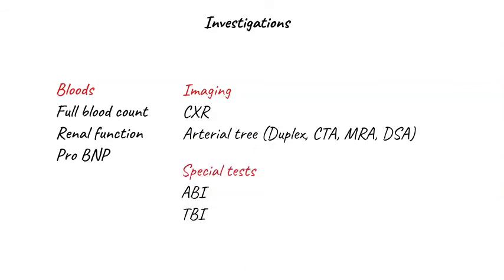Investigations for CLTI can be divided into bloods, imaging, and special tests. For bloods, consider a full blood count to rule out anemia as a contributor; check renal function as many patients have underlying impairment and may need contrast exposure; and an elevated pro-BNP correlates with increased periprocedural cardiac event risk, aiding risk stratification. For imaging, a plain chest X-ray may demonstrate cardiomegaly or pulmonary edema. If the patient is fit for intervention, arterial tree imaging is indicated — either arterial duplex, CT or MR angiogram, or digital subtraction angiogram. Special tests such as ankle brachial index or toe brachial index give an absolute measure of foot perfusion and assist risk stratification.